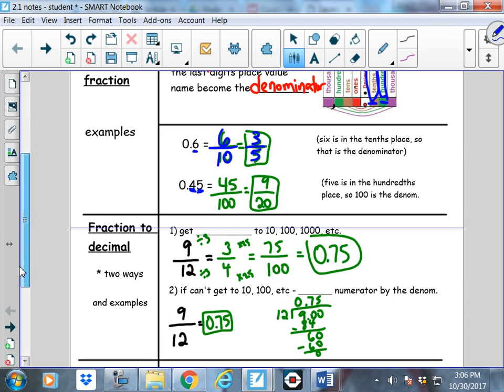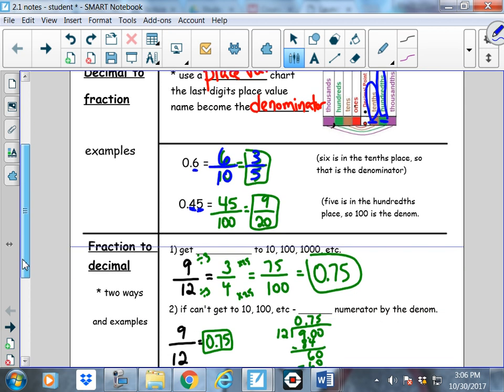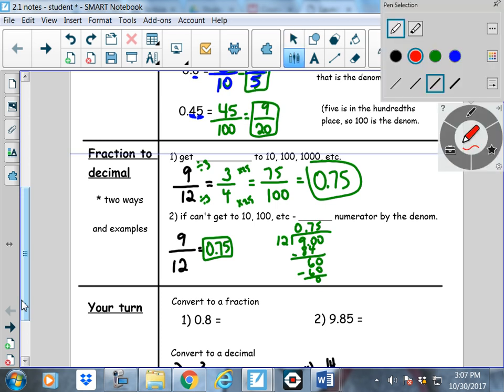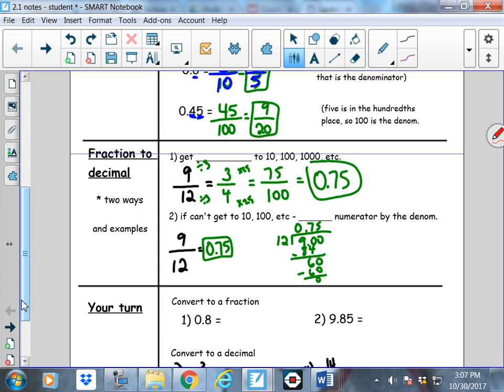What about the other way around? Fractions into decimals. If you can, get the denominator to one hundred. I'll switch back to red, because I'm doing all the vocabulary in red. Get the denominator to ten, one hundred, one thousand, et cetera. Denominator. You guys know what I mean. Ten, one hundred, one thousand, et cetera.